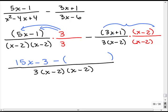So, I have 3x times x is 3x squared. Okay. And, let's do the outer term and the inner term. The outer term is negative 6x and the inner term is plus 1x. So, that would give me a minus 5x. And, the last term will be 1 times negative 2 which is minus 2.